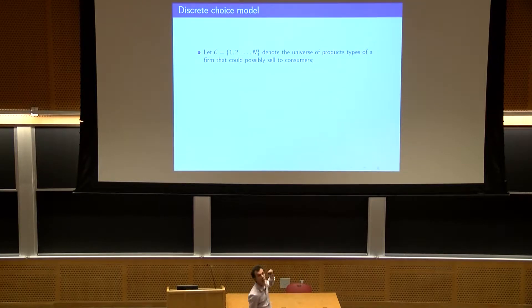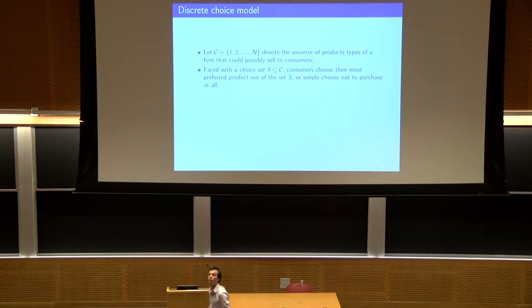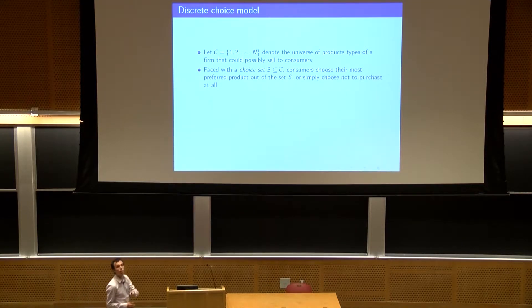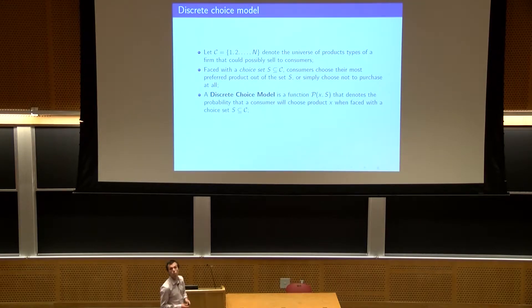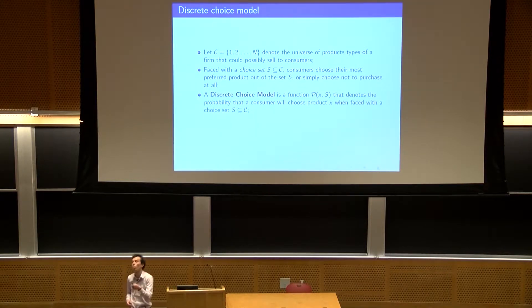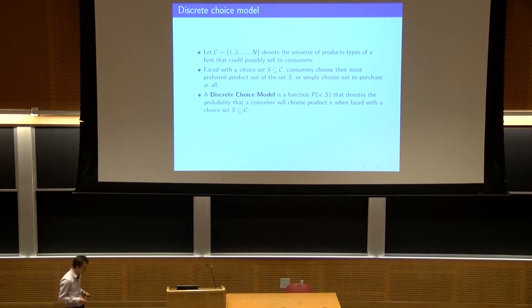We have a set C of n potential products that we can show to consumers. Faced with a subset of this set C, consumers will select one of these items, or actually don't purchase anything. So for any subset S, consumers come in and either buy one element or don't buy anything. We can think about the discrete choice model as a function P that receives one item X and one subset S, where X is inside S, and this function tells us the probability that the consumer will buy element X given that we show them assortment S.